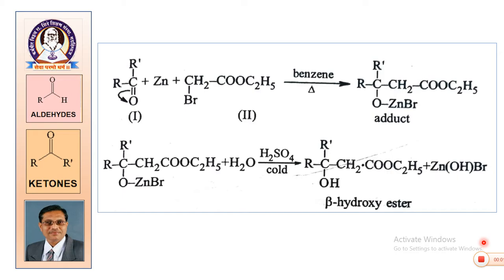Looking at the general reaction: we start with a ketone, then metallic zinc, and an alpha-bromoethyl ester. In the presence of benzene, we get an intermediate adduct. This adduct on hydrolysis gives the beta-hydroxy ester as the product.